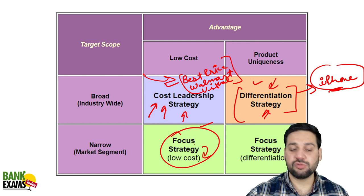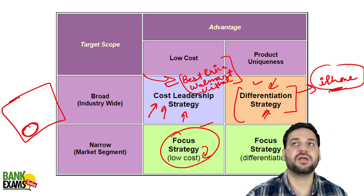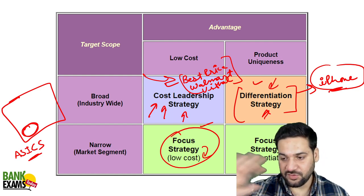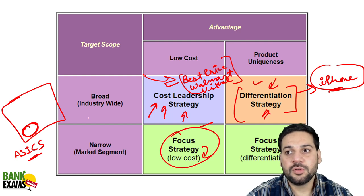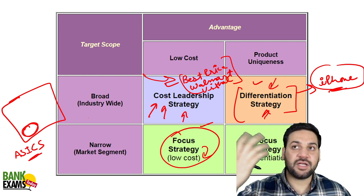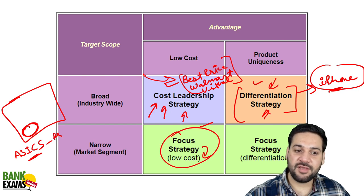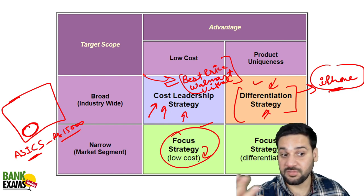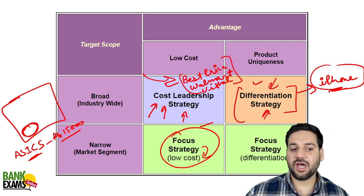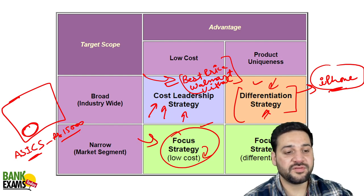Focus strategy — when you are focusing on a small segment. A good example is Asics. Think of a retired rich person or a retired IAS officer — people who have money and are older. They use Asics gel shoes, which cost around 15,000 rupees a pair. These gel shoes give comfort to your knees and legs. Those people buy them because Asics is focusing on that segment, and their products are different — targeting a small market.